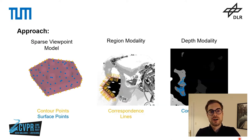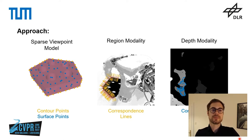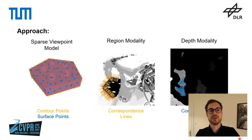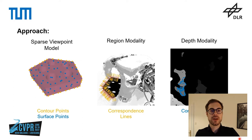For our approach we use a so-called sparse viewpoint model to represent the object geometry. A sparse viewpoint model is generated by rendering the object from views all around it, and for each view sampling both contour points and surface points. The big advantage of this representation is that it avoids the rendering step during tracking, which is highly important for efficiency.